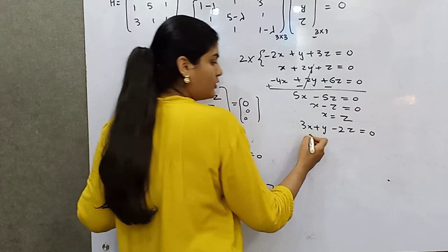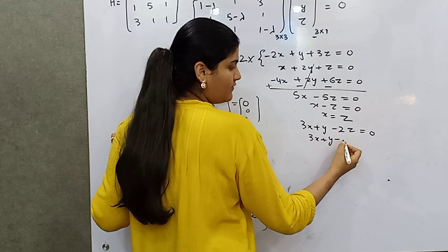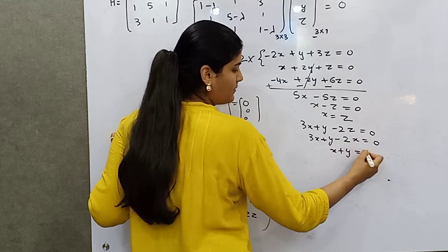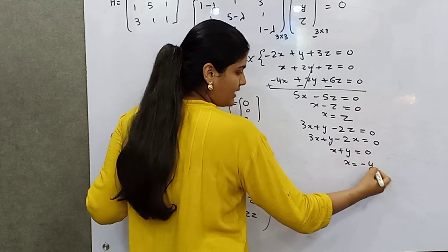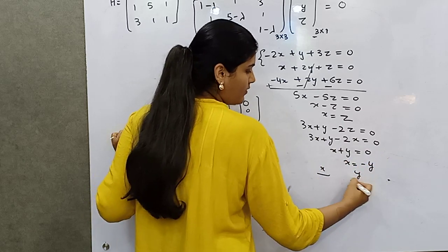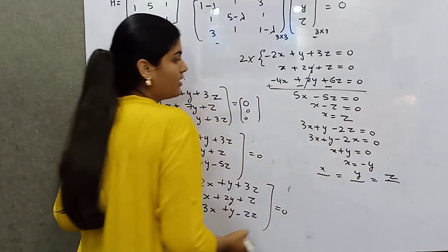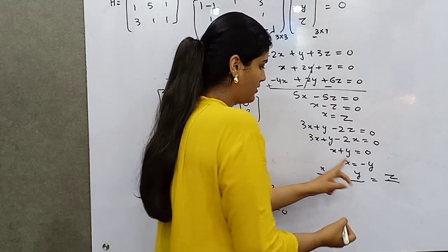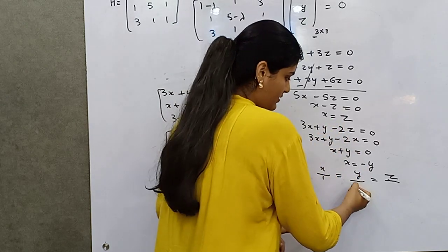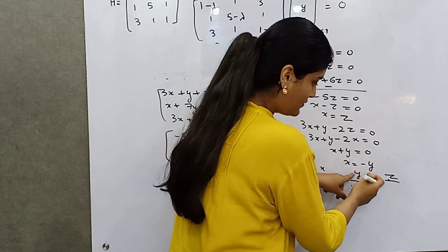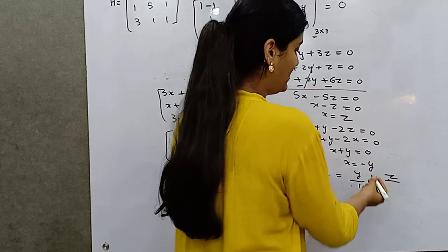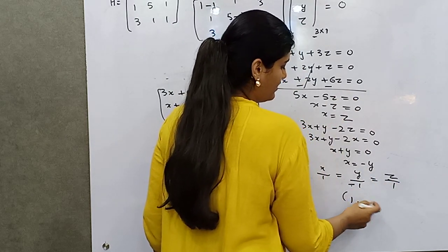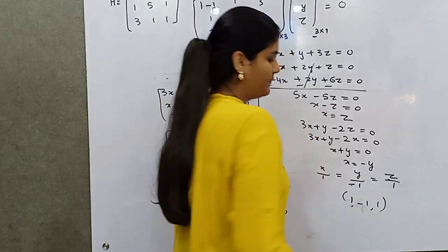Substituting x = z into the first equation: 3 minus 2 gives x + y = 0, so x = minus y. The eigenvector coefficients are: x corresponds to z with coefficient 1, y corresponds to x with coefficient 1, and z is minus 1. So the eigenvector for lambda = 3 is [1, -1, 1].